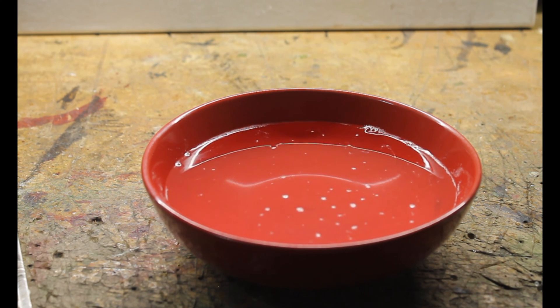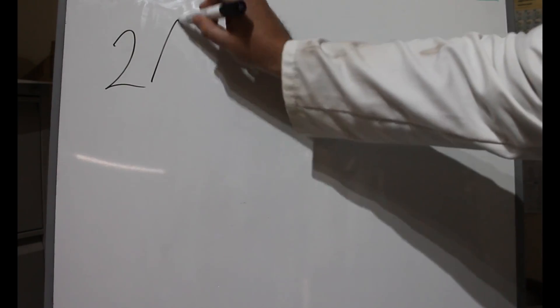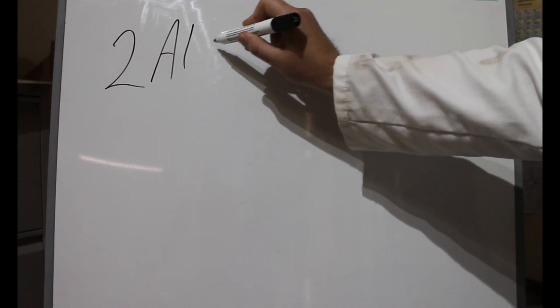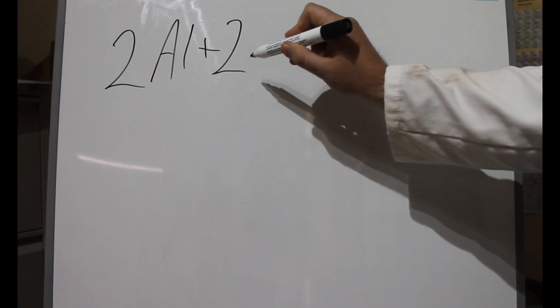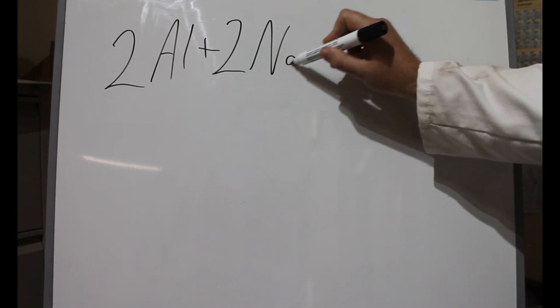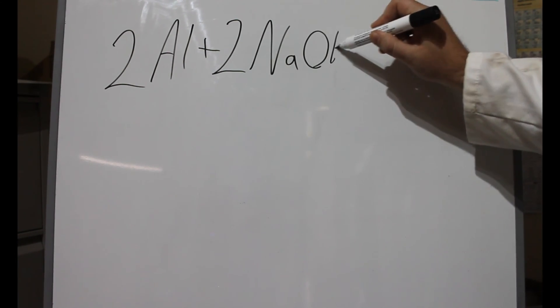But let's have a look at the chemistry that was taking place during this reaction. This reaction has a relatively simple equation. We're adding our aluminium foil to sodium hydroxide and water.